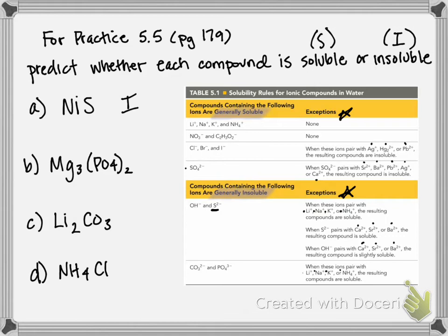For magnesium phosphate, I can go and consult my table and see that phosphate ions are typically going to be insoluble, unless they're paired with an exception. So I can look and see the exceptions are lithium, sodium, potassium, and ammonium. Magnesium is not listed as one of the exceptions. So therefore, this compound is also insoluble, because phosphates typically are.